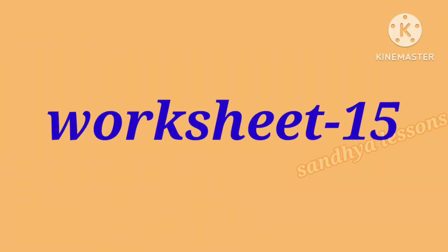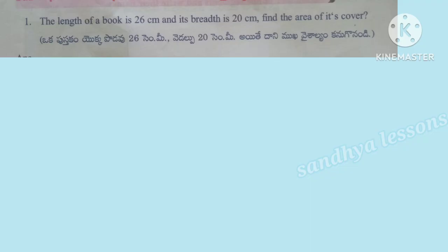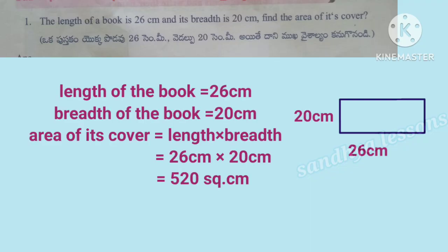Worksheet 15. First problem: the length of a book is 26 cm and its breadth is 20 cm. Find the area of its cover. Length equals 26 cm, breadth equals 20 cm. Area of its cover equals length into breadth, which equals 26 cm into 20 cm, that is 520 square centimeters.